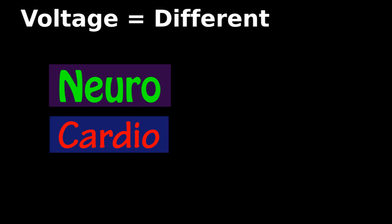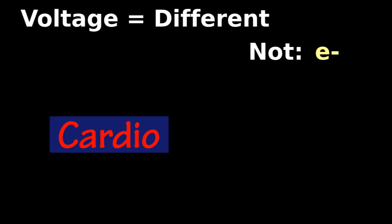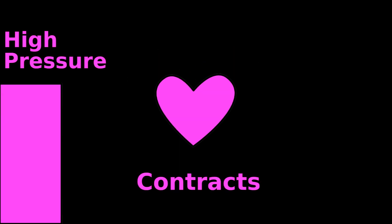The heart muscle also has a voltage or difference. Instead of electricity, it has a pressure differential. When the heart contracts, there is a lot of pressure. When it relaxes, there is less pressure.